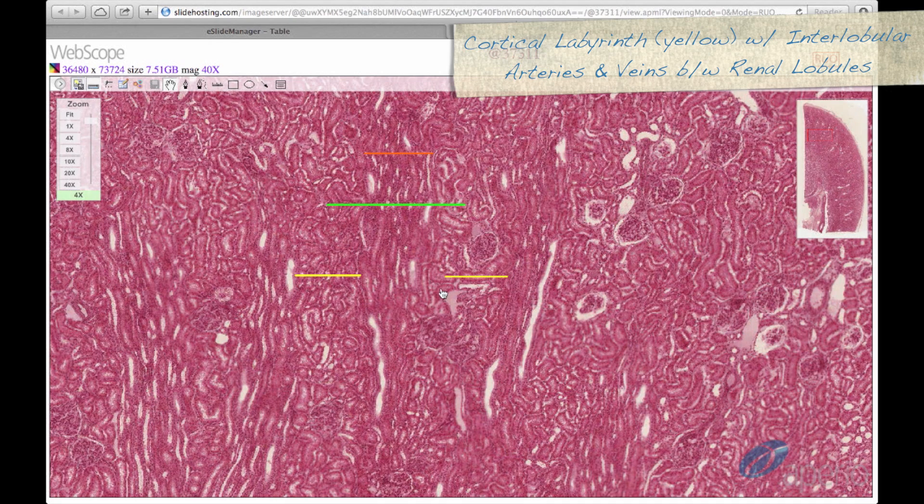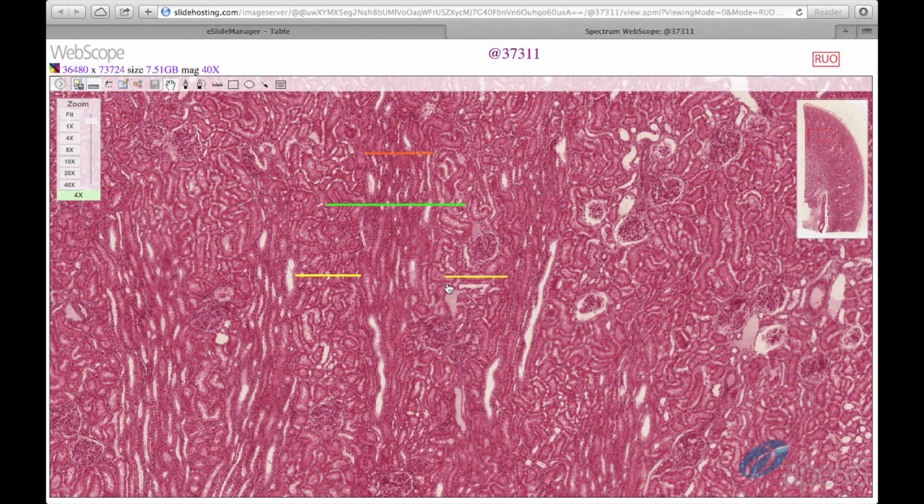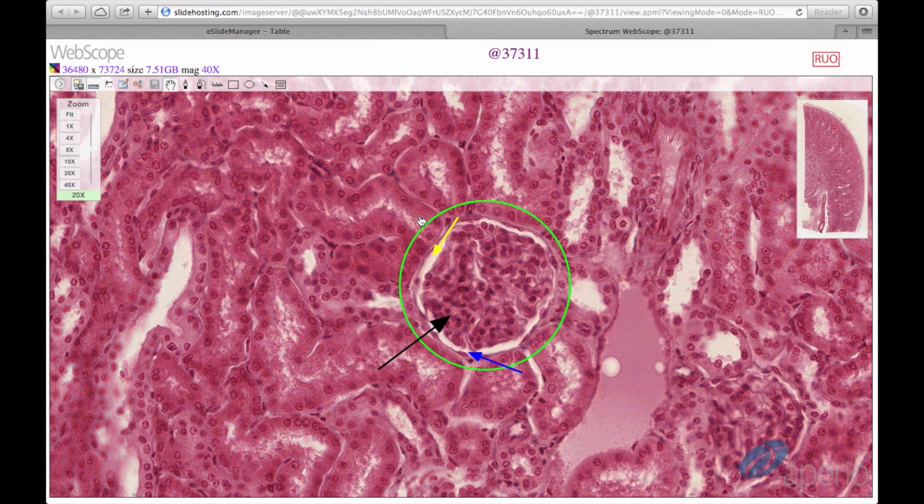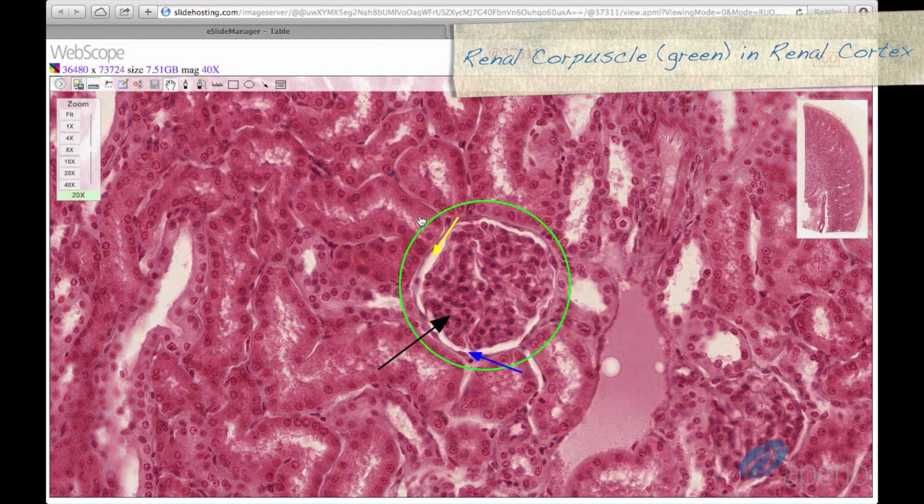Renal lobules have interlobular arteries and veins running between them. We have zoomed in on the cortex to observe the renal corpuscle, circled here in green. Please note that the renal corpuscle is only found in the cortex.